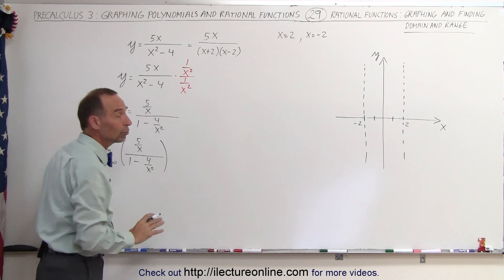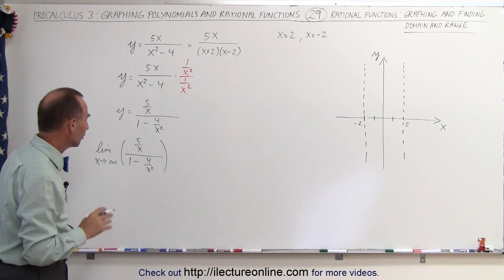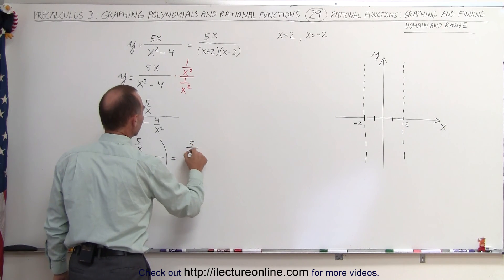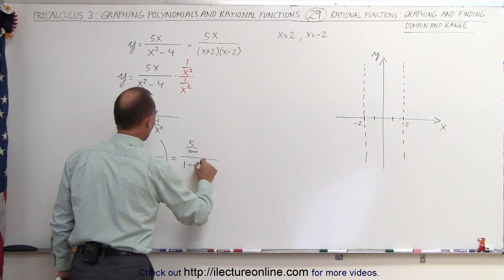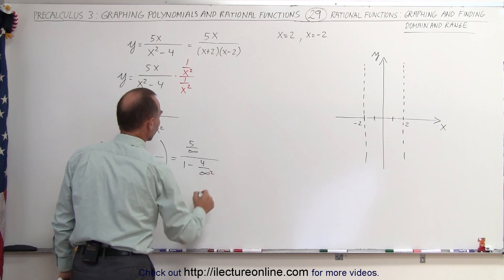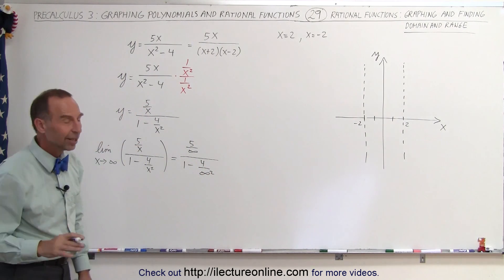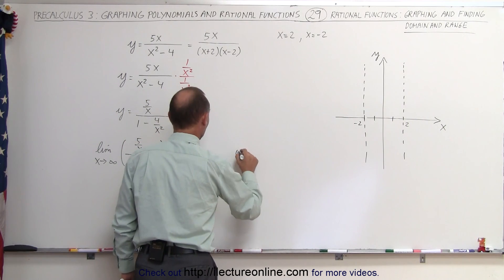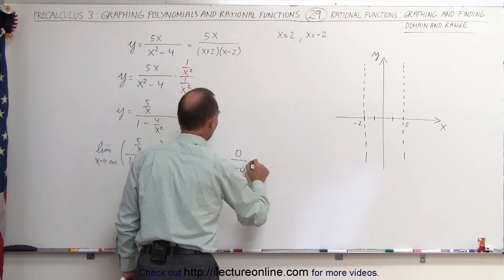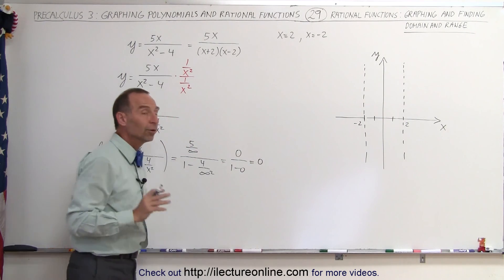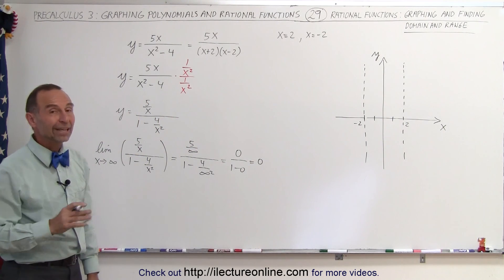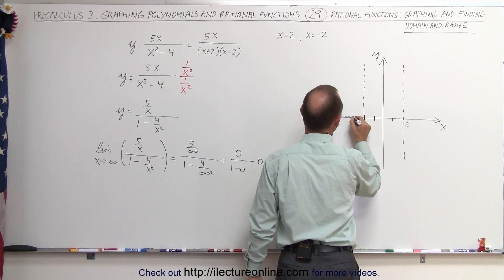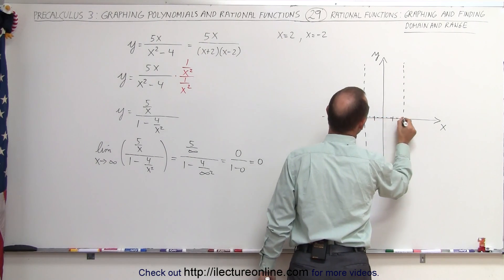We do this because we want to find the horizontal asymptote if there is one. When we take the limit, we get 5 divided by infinity in the numerator, divided by 1 minus 4 divided by infinity squared. Whenever you divide by infinity or infinity squared, you get 0. So this becomes 0 over 1 minus 0, which is simply 0. That means y = 0 is the horizontal asymptote. Let's indicate that by drawing a dashed line just above the x-axis.